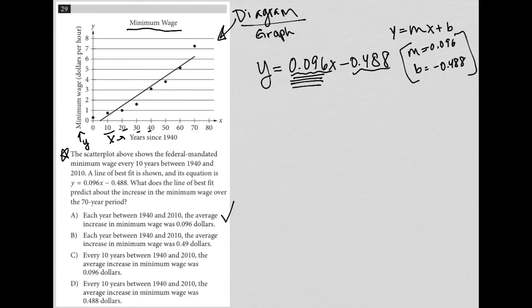Choice B says each year between 1940 and 2010, the average increase in minimum wage was $0.49. Well there isn't any, I mean maybe they're referring to the 0.488 and just rounding it. But first of all, that's a minus sign here. Second of all, that's a y-intercept that has nothing to do with the increase. So B is gone.